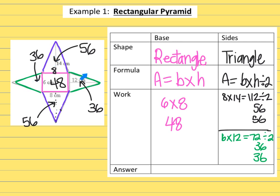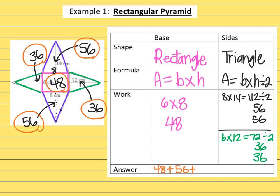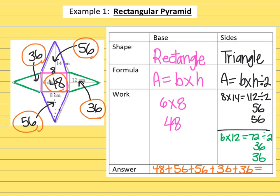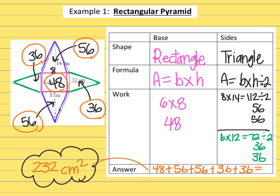Looking at this figure, there are four sides and one base, so I should have five total numbers to combine for the total surface area. When I combine them: 48 + 56 + 56 + 36 + 36 — those are all five pieces — the final answer is 232 square centimeters. Note that 56 + 56 is 112 and 36 + 36 is 72, so you could also just add 72 + 112 + 48 to get the same result.